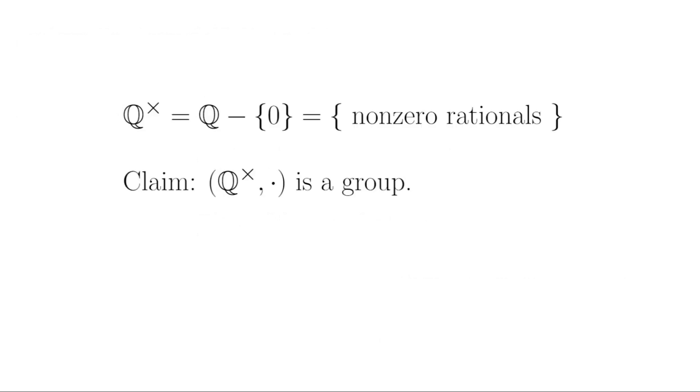So far, I've only provided examples of additive groups. So let's examine a multiplicative group. The set Q× is notation for the rational numbers minus 0. In fact, you could use this × notation for any set minus its additive identity, but it's most commonly used for Q and R. I claim that Q× is a group under regular multiplication.